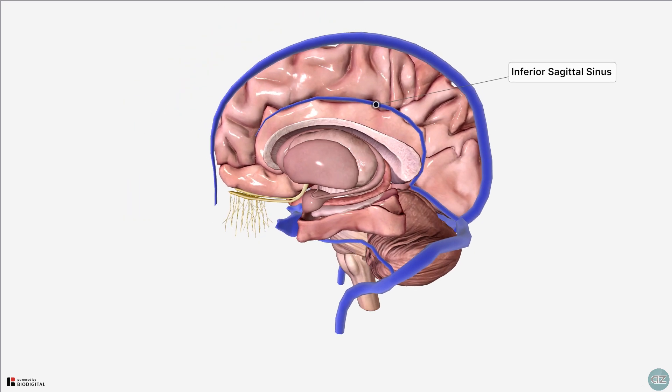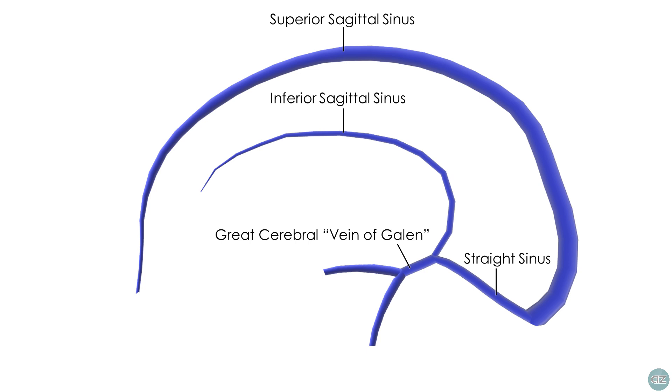Returning to the sagittal view, you can see a smaller sinus located inferiorly and running within the free border of the falx cerebri. This is the inferior sagittal sinus. If we follow it posteriorly, we see that it drains to the straight sinus, which is formed by the union of the inferior sagittal sinus and the great cerebral vein, commonly referred to by its eponymous name, the vein of Galen. I've just switched to a schematic to demonstrate the relationship of some of these veins.